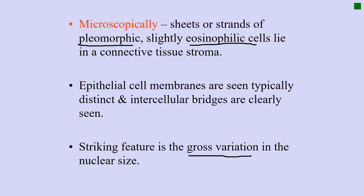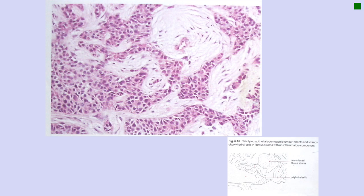This tumor microscopically resembles something that could be mistaken as a malignant tumor. Looking at the slide, you can see sheets of epithelial cells where the size and shape of cells clearly vary. Some cells have large nuclei, some have small nuclei - different sizes and shapes. This is pleomorphism, which is typically associated with malignancies.